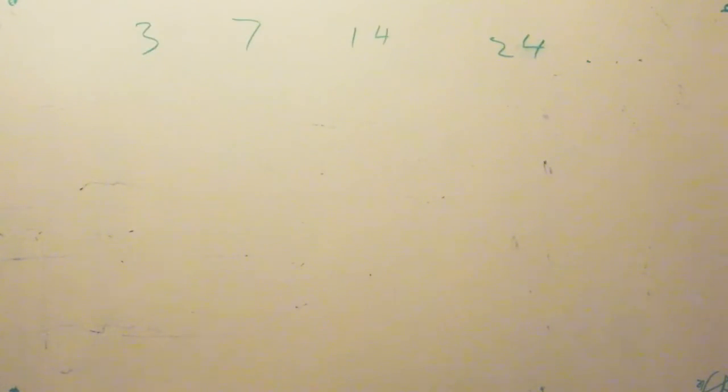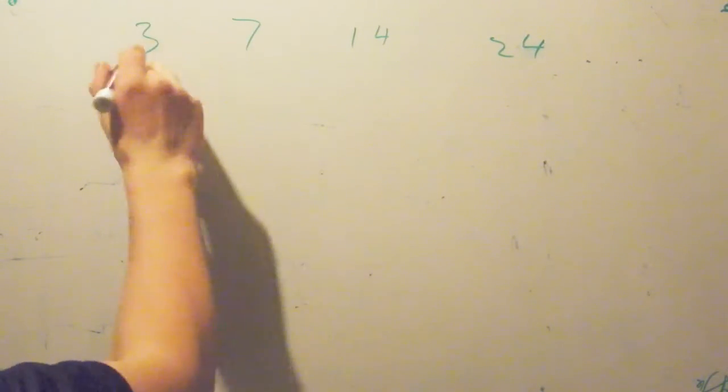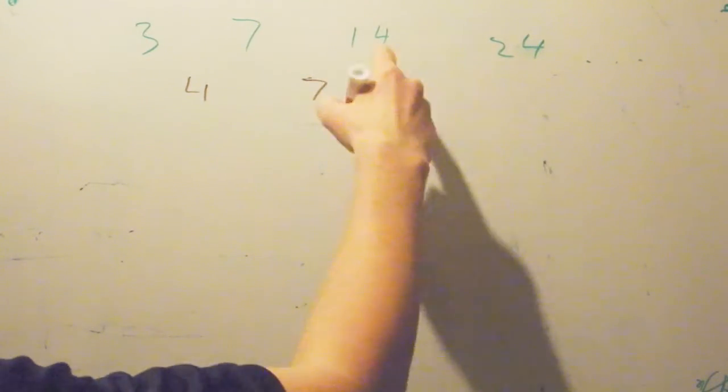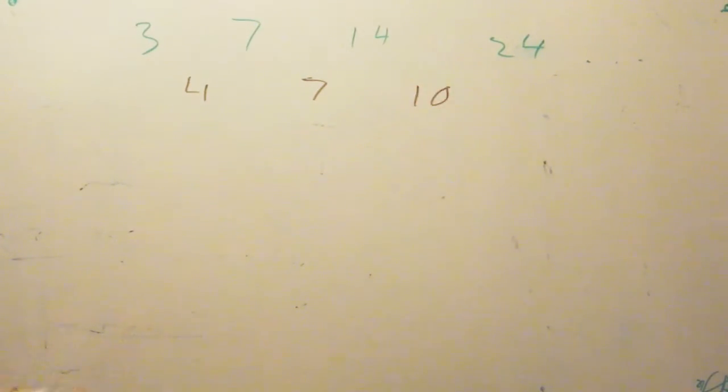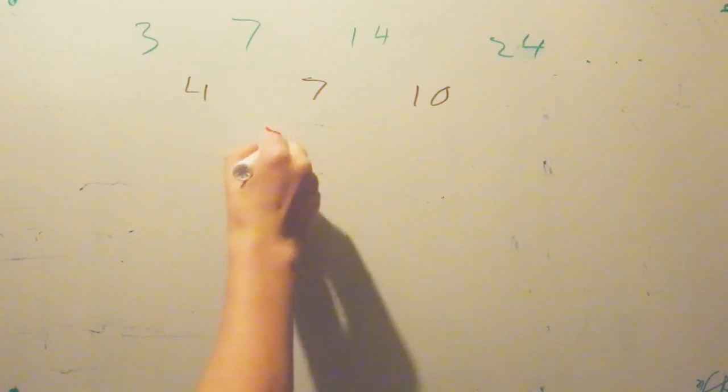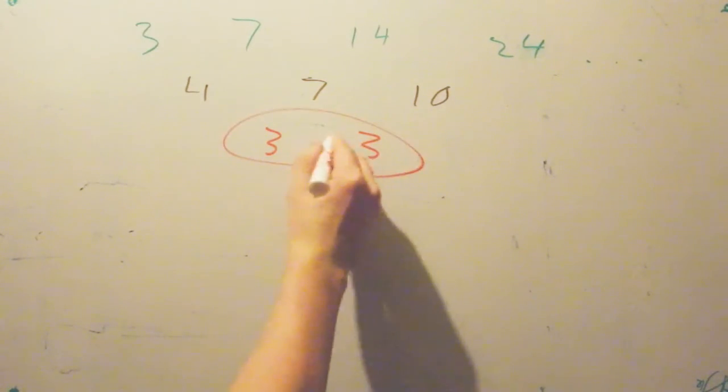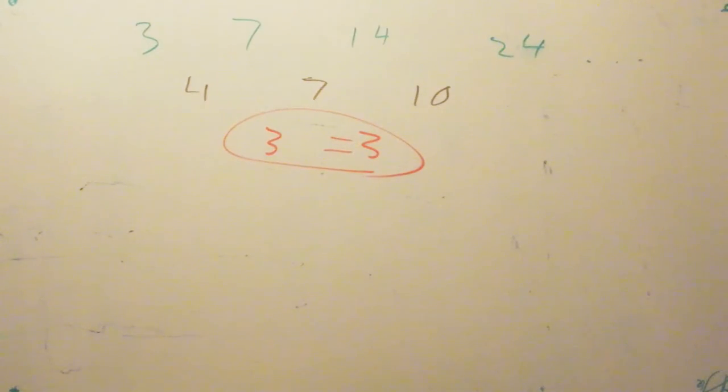Okay, now here's another sequence, and at first glance, this does not look like it's quadratic at all. However, we can prove that this is, because 7 minus 3 is 4, 14 minus 7 is 7, 24 minus 14 is 10. Then, 7 minus 4 is 3, and 10 minus 7 is also 3. These two are equal, so it must be a quadratic equation.